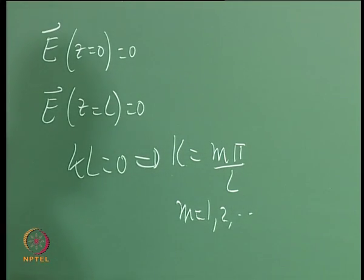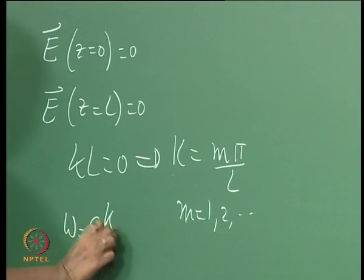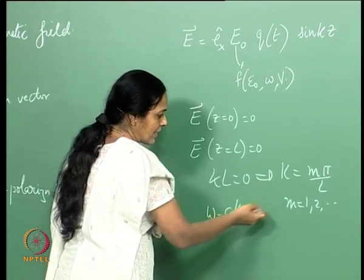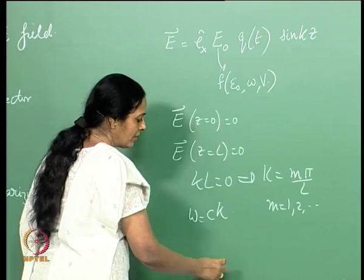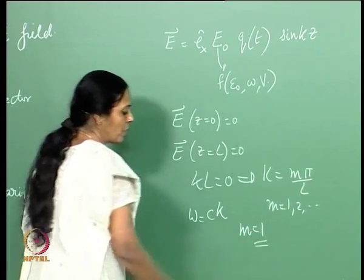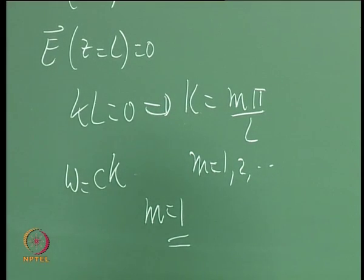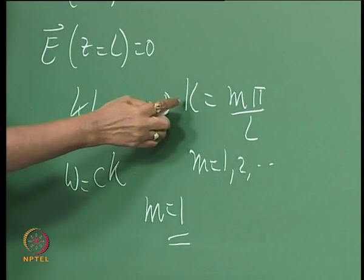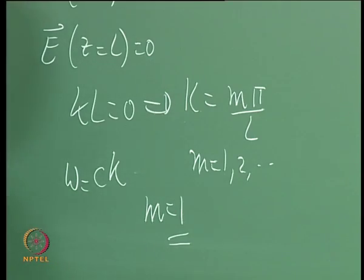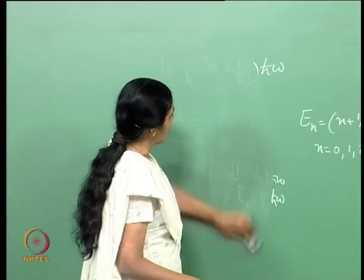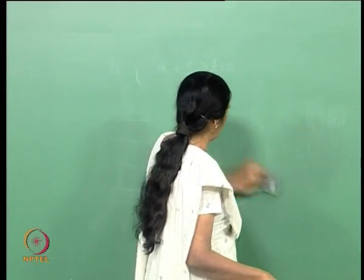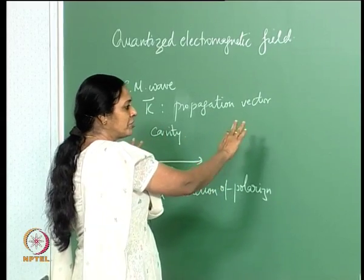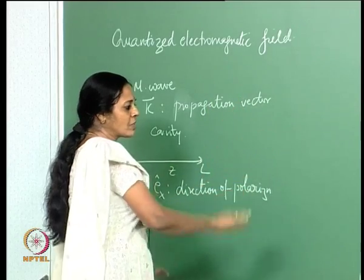The frequency omega is related to k through the standard relation omega equals c times k, which means omega is c times pi over L or 2c pi over L and so on. For simplicity we choose m equal to 1, without loss of generality, so we are considering an electromagnetic wave of frequency omega equal to pi c over L. This is a single-mode field propagating along the z axis, chosen for simplicity.